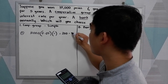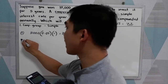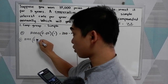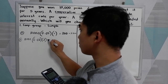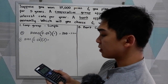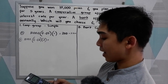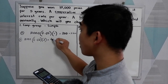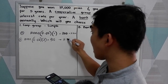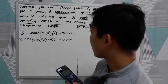On the second year, we compute 10,000 × 0.02 × 2. The interest is 400 pesos, so your money becomes 10,400. Now we will compute through the fifth year.